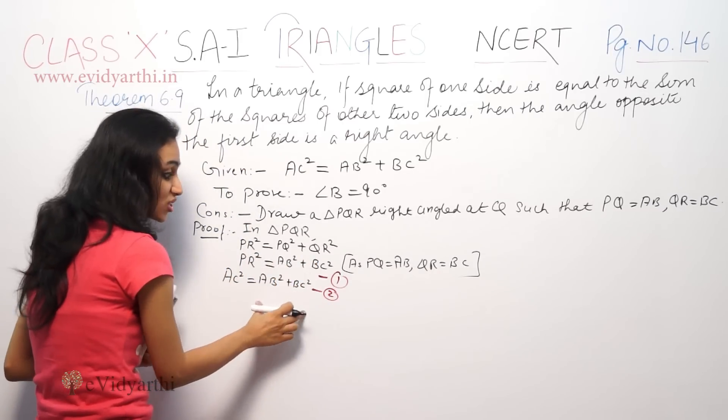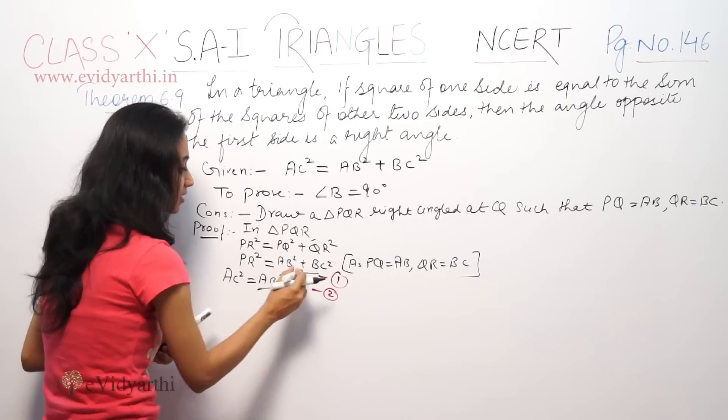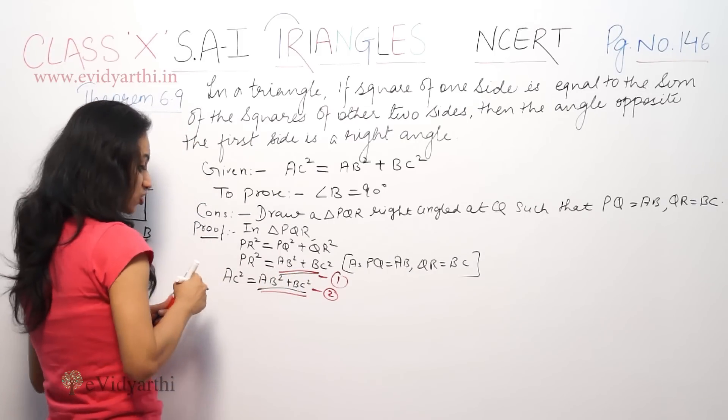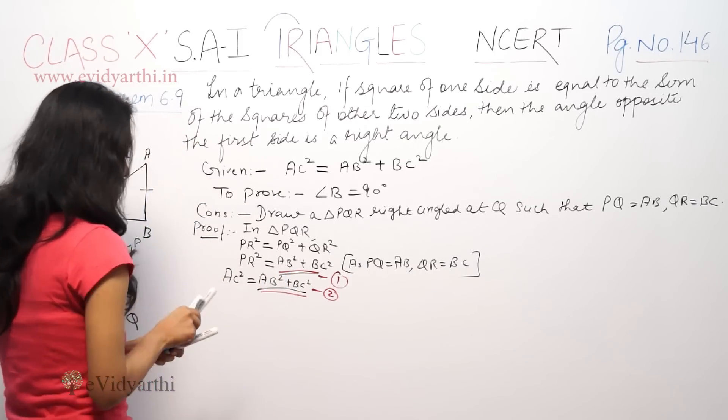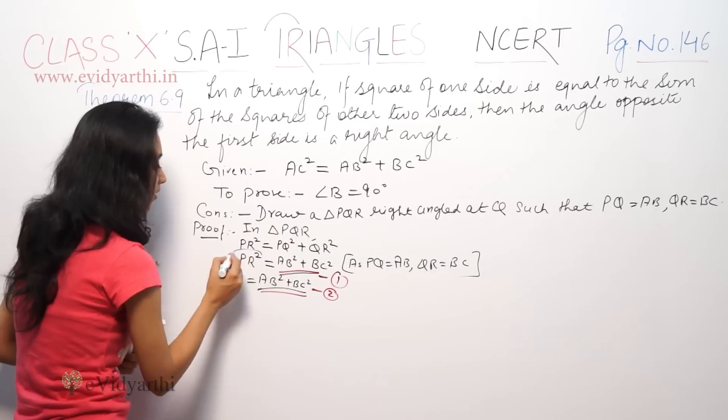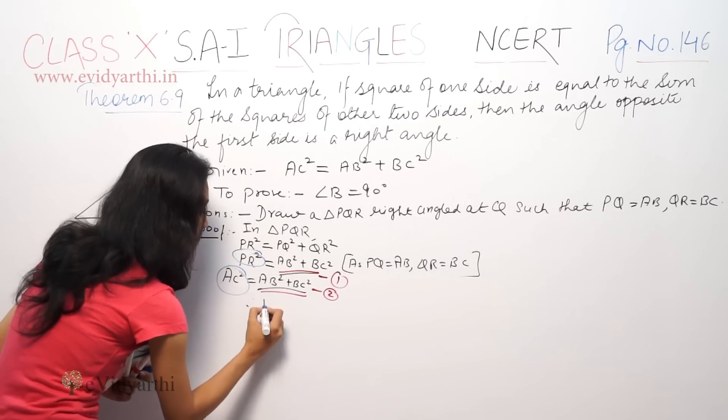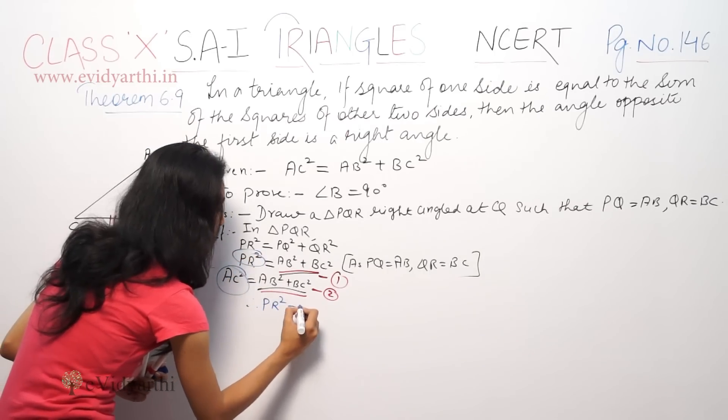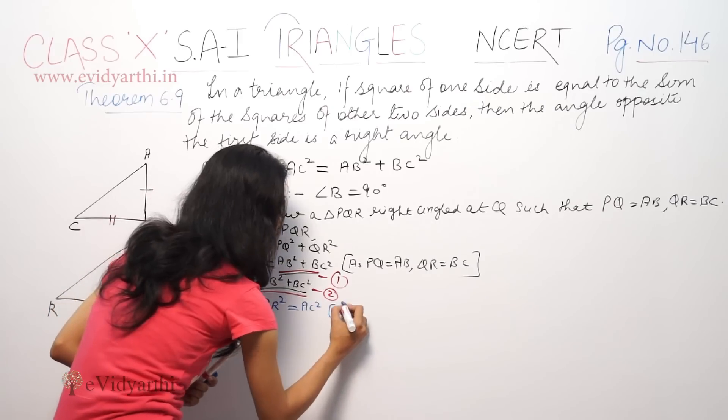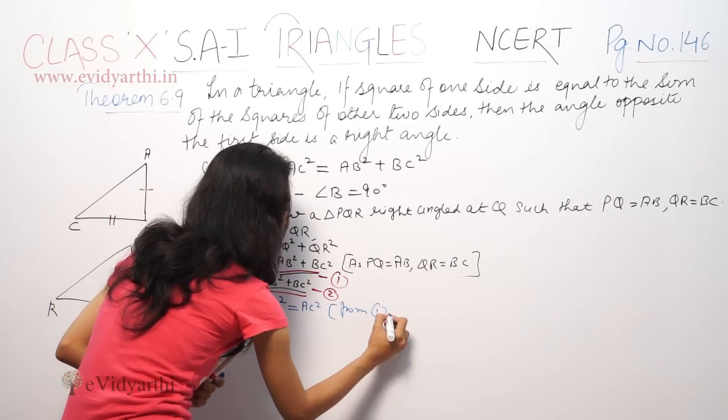From first and second equations, you can see the right-hand side is the same. The left-hand side is PR square, but AC square is also equal. Therefore, PR² is equal to AC² from first and second equations.